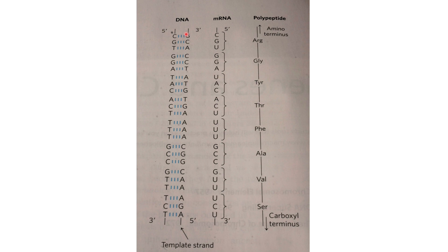The complementary strand to DNA is here and the transcribed product is the messenger RNA. The complementary base pairs are G to C, C to G, A to U, C to G, T to A, and so on. This strand — the transcribed strand — is messenger RNA.